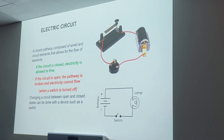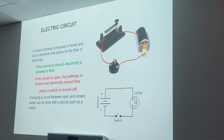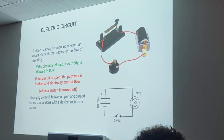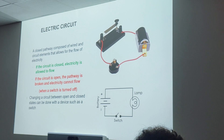Electric circuits — it is a closed pathway composed of wire and circuit elements that allows for the flow of electricity. We have a light bulb here, a battery here, and some wires. If the circuit is closed, that means electricity is allowed to flow. If the circuit is open, the pathway is broken and electricity cannot flow — for example, when a switch is turned off. So right now, the switch is turned off — our pathway is open. The circuit is open.